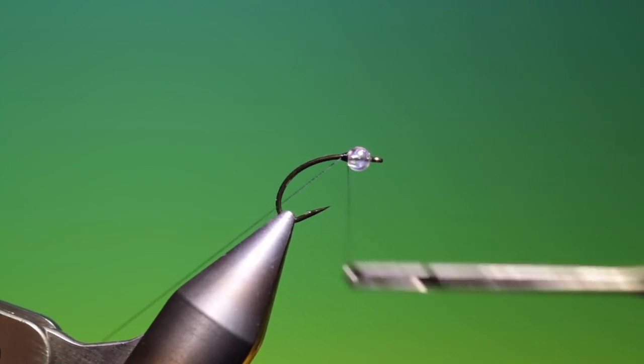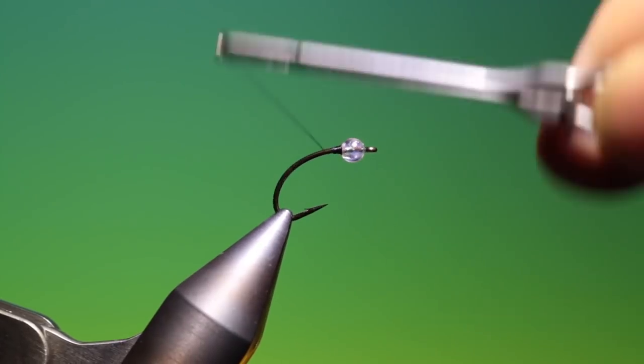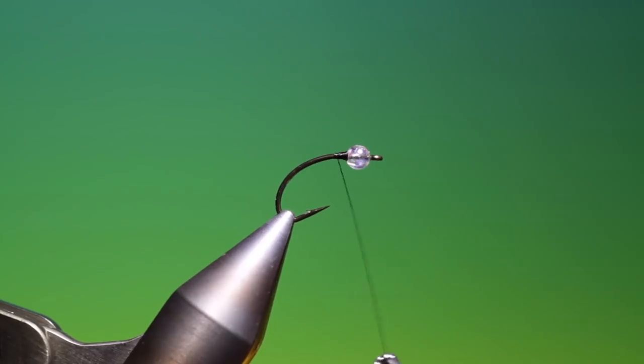We'll just put this on. I fish with this pattern a real lot. Just put the black tying thread on there to secure the bead, make sure it's not slipping. There we are.